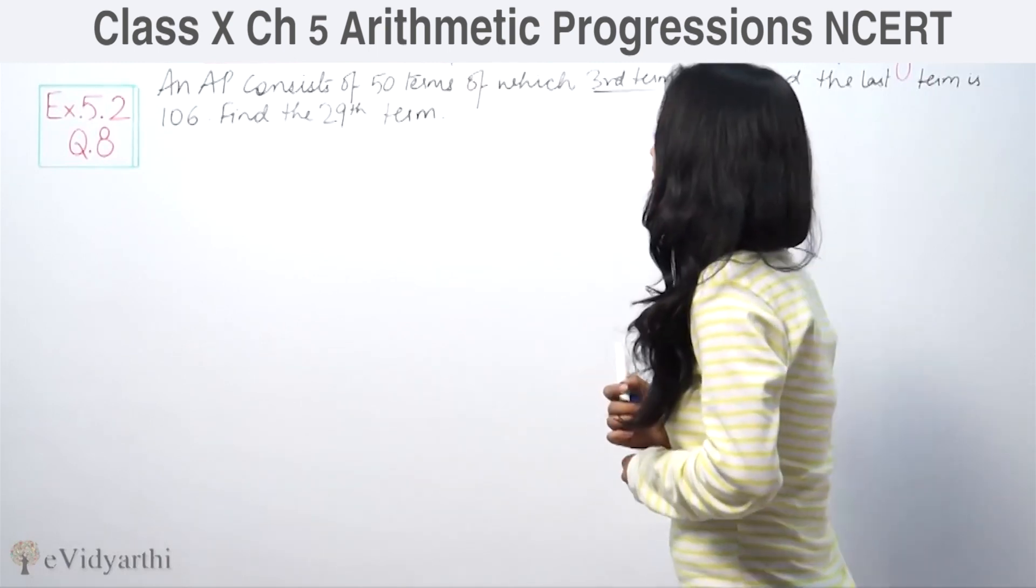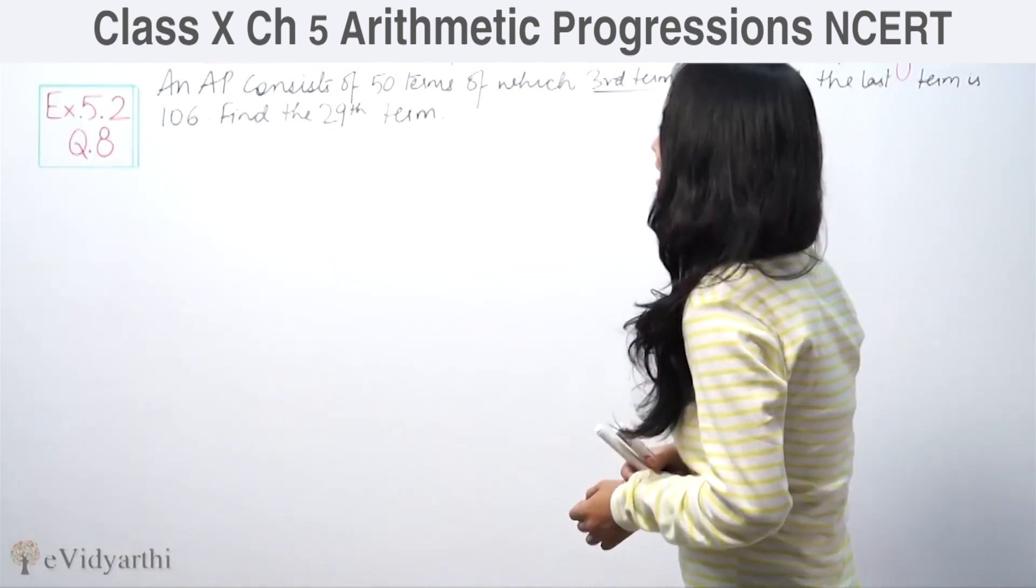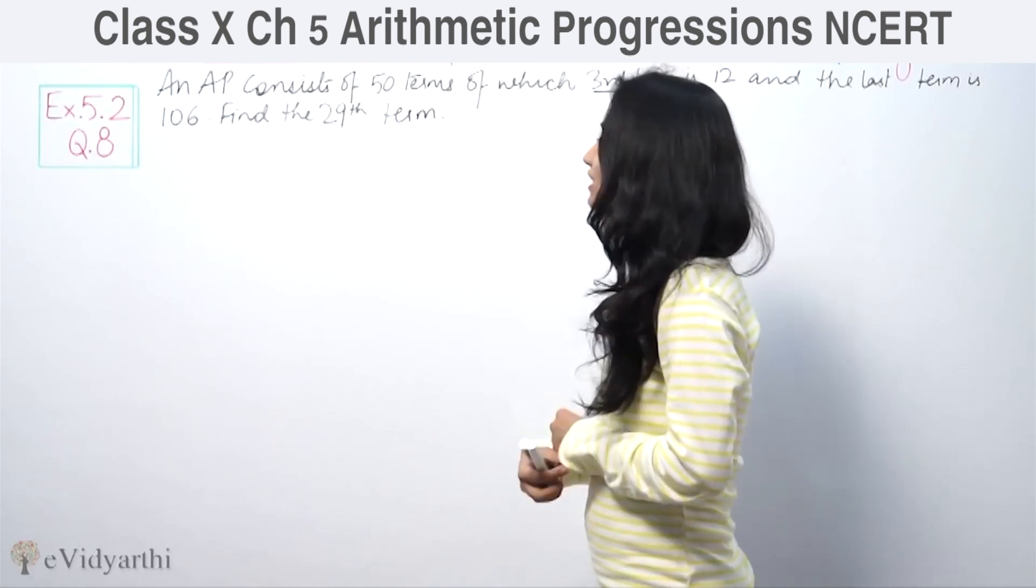The question is: An AP consists of 50 terms of which third term is 12 and last term is 106. Find the 29th term.